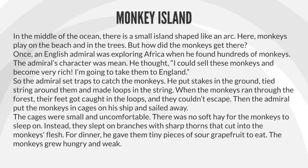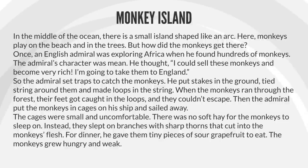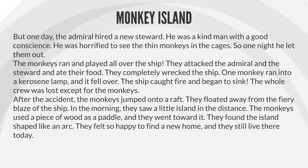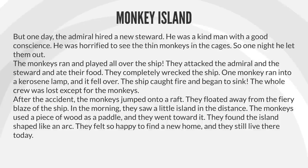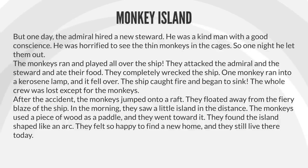The cages were small and uncomfortable. There was no soft hay for the monkeys to sleep on. Instead, they slept on branches with sharp thorns that cut into the monkeys' flesh. For dinner, he gave them tiny pieces of sour grapefruit to eat. The monkeys grew hungry and weak. But one day, the admiral hired a new steward. He was a kind man with a good conscience. He was horrified to see the thin monkeys in the cages. So one night, he let them out. The monkeys ran and played all over the ship. They attacked the admiral and the steward and ate their food. They completely wrecked the ship. One monkey ran into a kerosene lamp, and it fell over.